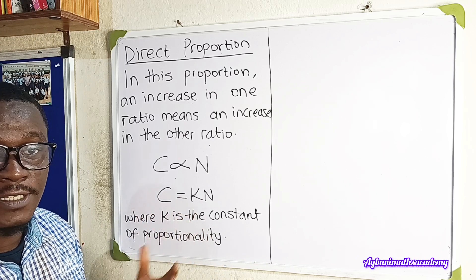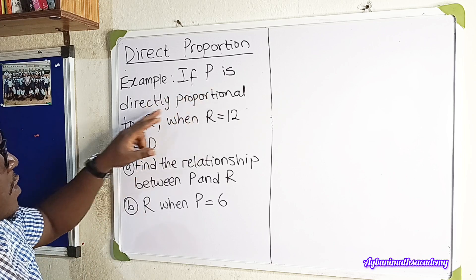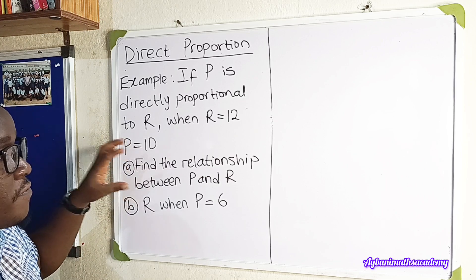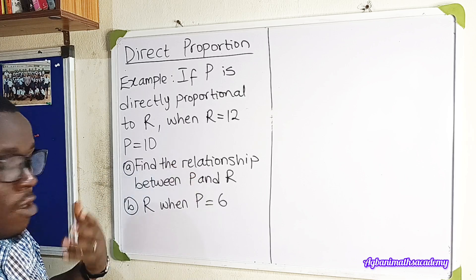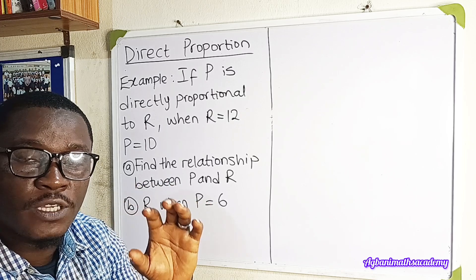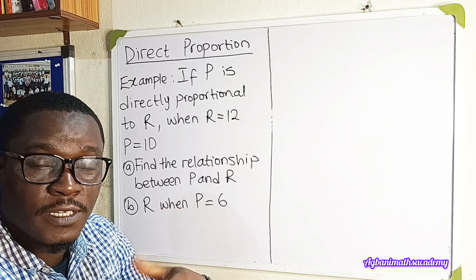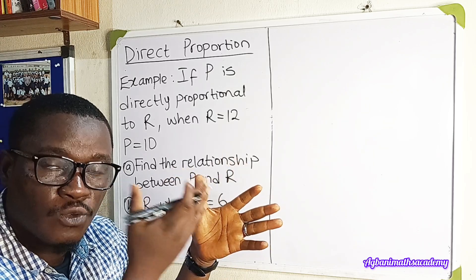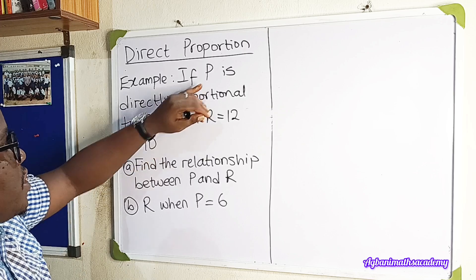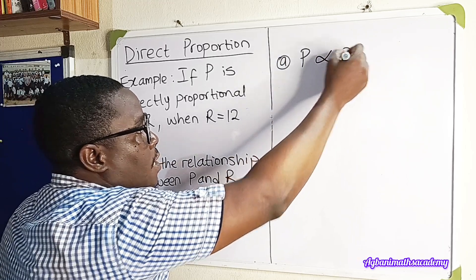We'll use this to solve some examples. In this example, we are told that P is directly proportional to R. When R is equal to 12, P is equal to 10. We are expected to find the relationship between P and R, and also find the value of R when P is equal to 6. The relationship between two ratios in a direct proportion is the constant of proportionality K, which joins P to R.